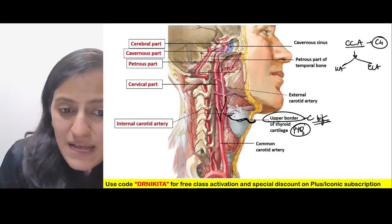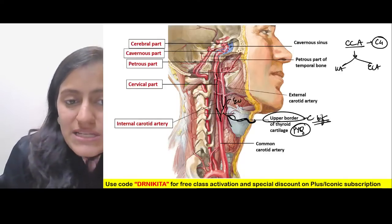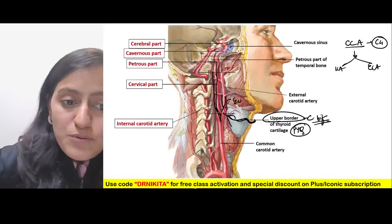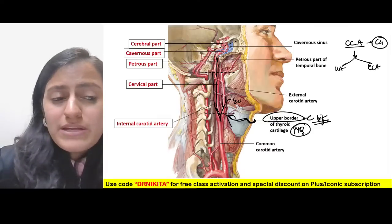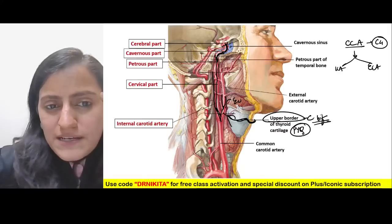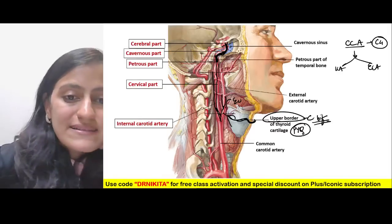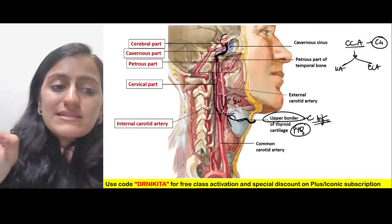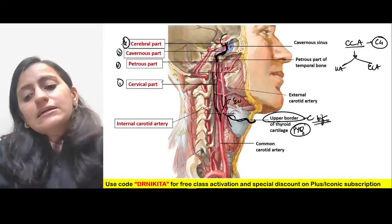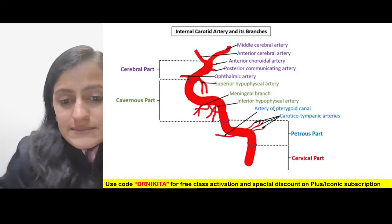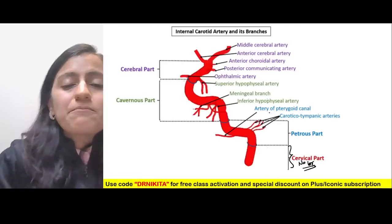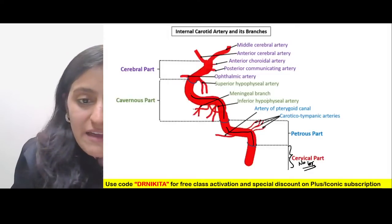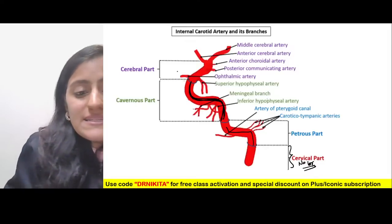If branches are seen coming from the neck portion, it is ECA; where there are no neck branches, it is ICA. The parts of ICA are: cervical part (neck), petrous part (through the petrous bone), cavernous part (forming the S-shape siphon), and cerebral part above the cavernous part. These are the four major parts of the internal carotid artery.